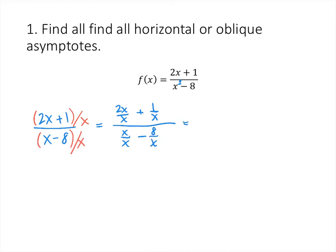When we do that we get a bunch of small fractions: 2x over x plus 1 over x, divided by x over x minus 8 over x. Now we simplify as many of those fractions as we can. 2x divided by x is just 2, because the x's divide out. 1 over x we leave as 1 over x. On the bottom, x over x is just 1, and 8 over x we leave as 8 over x. Now as x goes to plus or minus infinity, 1 over x is going to go to 0.